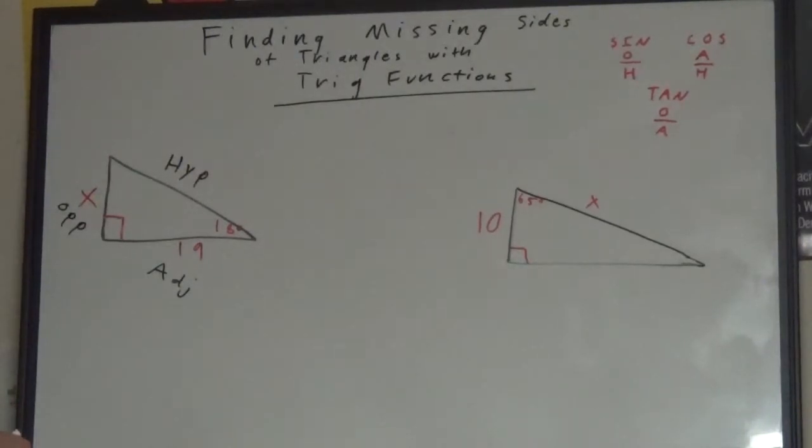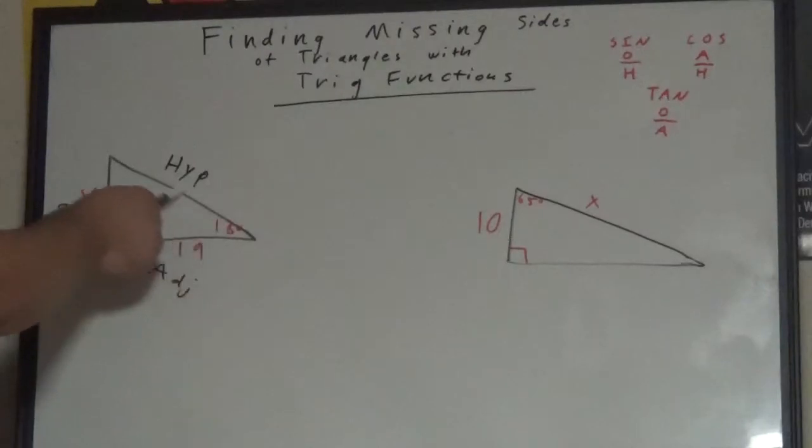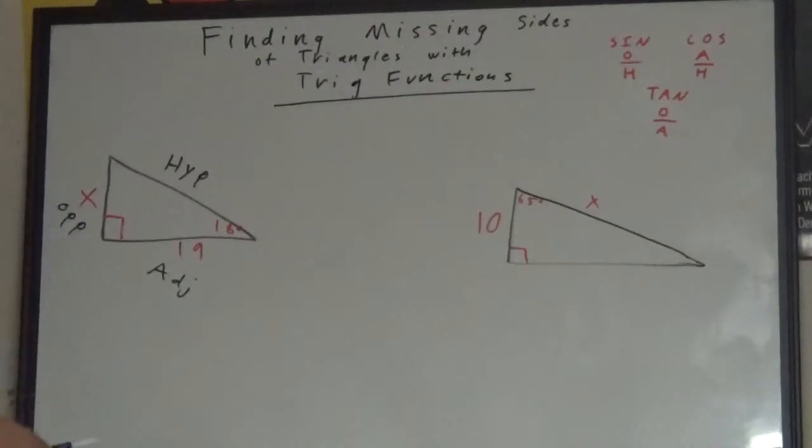Second step is to select the correct trig function and then set it up. Well, we look at what sides we are given. Under hypotenuse, we have nothing. With opposite, we have the value of x, the unknown, the variable, and adjacent gives us a value of 19.